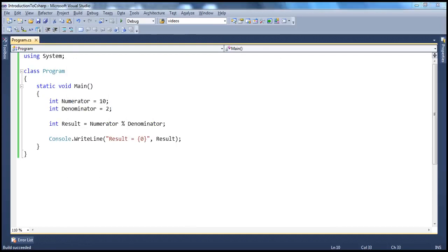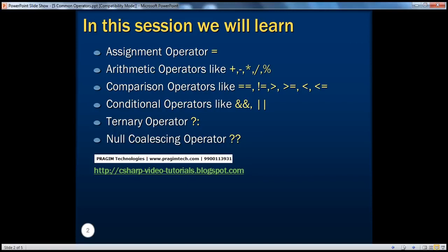So, simple arithmetic operators — just like any other programming language — plus, minus, multiply, forward slash for quotient, and modulus or percentage for the remainder.